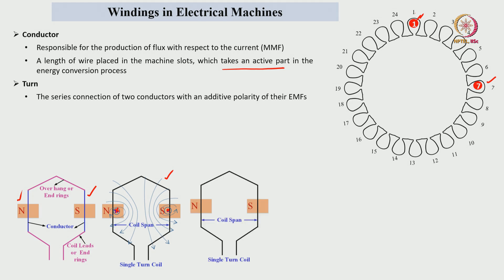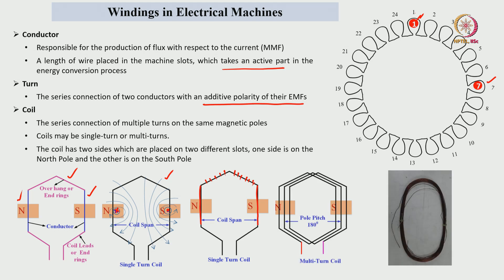A turn is nothing but a combination of two conductors with additive polarity of their MMF. These two conductors are connected with an overhang — the pink color one is the overhang — and this configuration has only one turn. A coil consists of n number of turns, all connected in series fashion. A coil has two coil sides which are placed in two different slots — one coil side is placed at the north pole side and the other at the south pole side. The physical coil has two ends: one is the starting end and the other is the ending end.